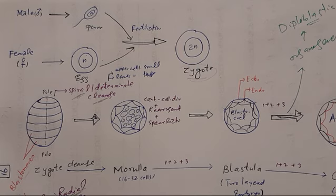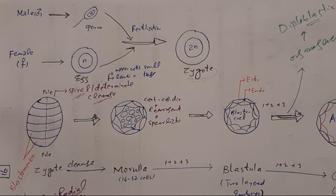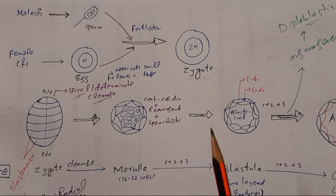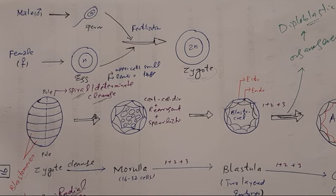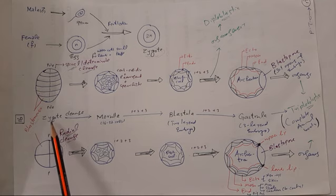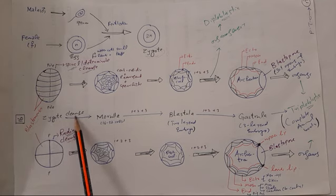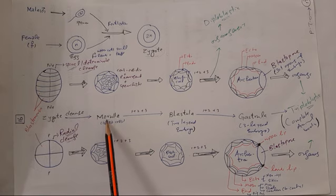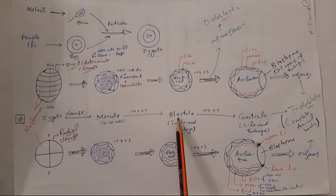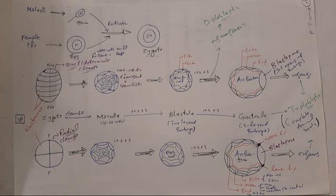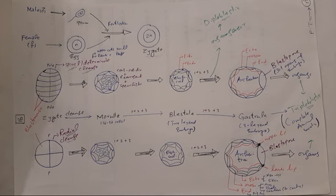Most animals have a similar pattern of embryonic development. The zygote is the first cell of the new organism and is a single cell. The zygote then undergoes cleavage — mitotic divisions — to form a solid ball of cells called morula. Then a hollow ball of cells or two-layered embryo called blastula, then a three-layered embryo called gastrula, and finally organogenesis from the three germinal layers: ectoderm, mesoderm, and endoderm.